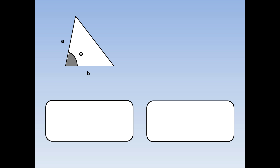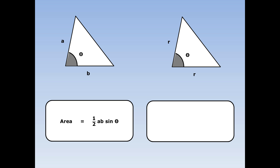For any triangle with lengths A and B and angle theta, the area is equal to half AB sine theta. But for our triangle, both A and B are radii, so they're both equal to R, so the area of this triangle is half R squared sine theta.